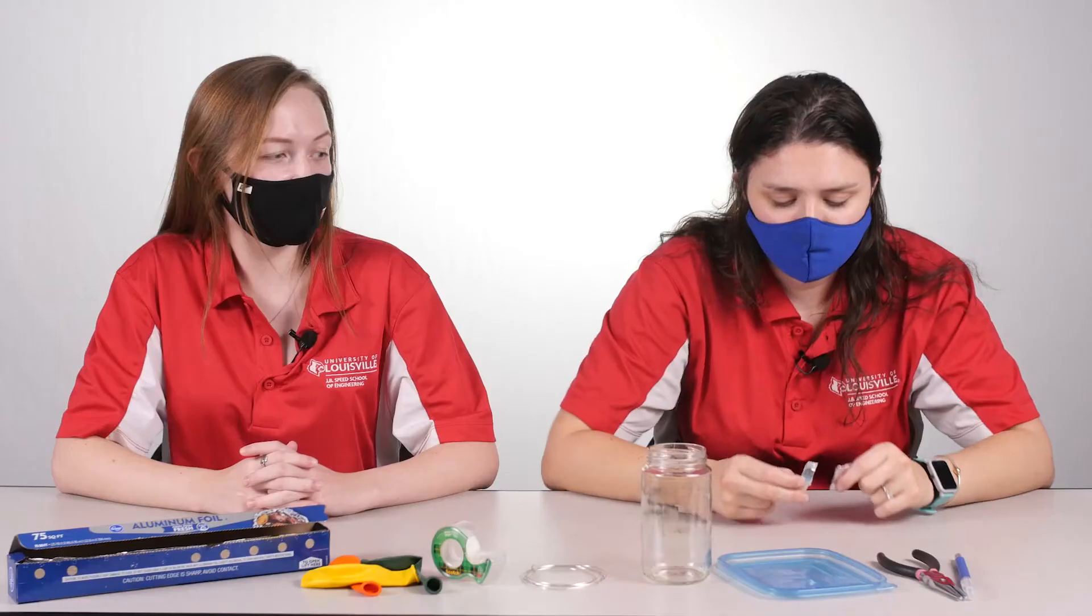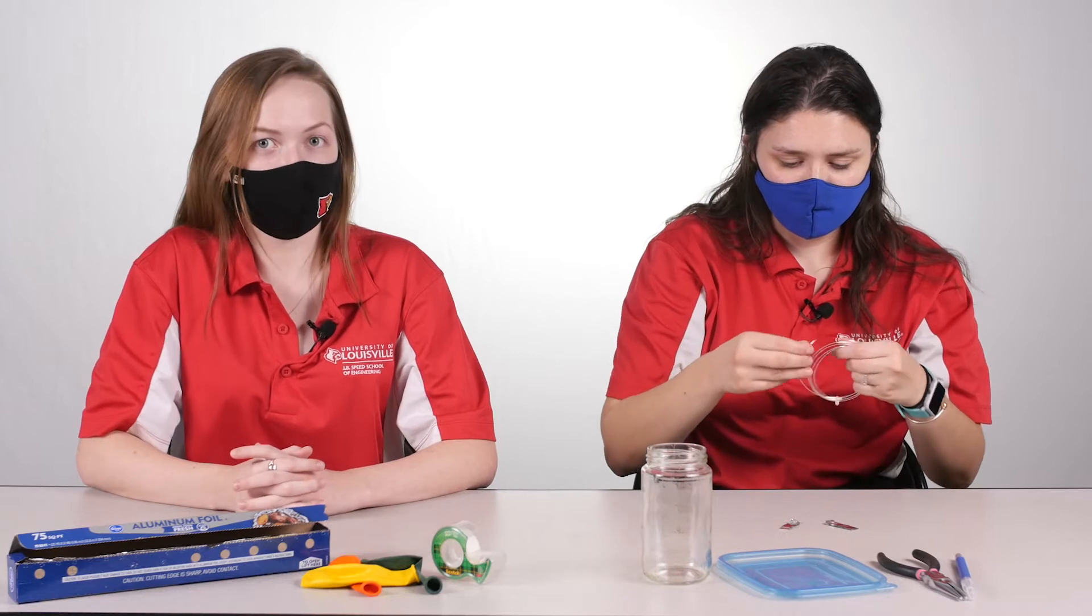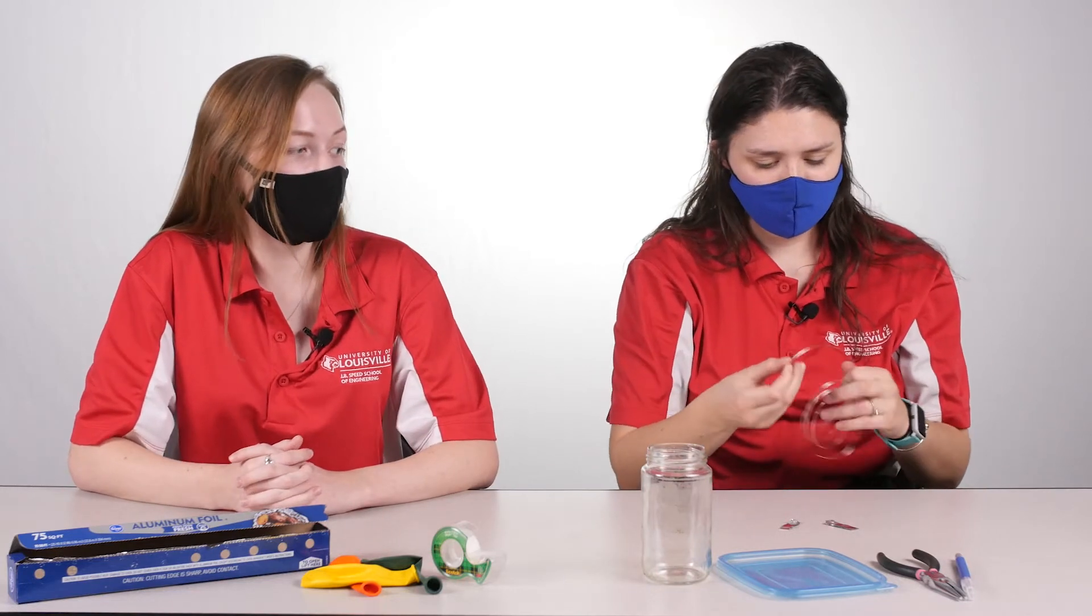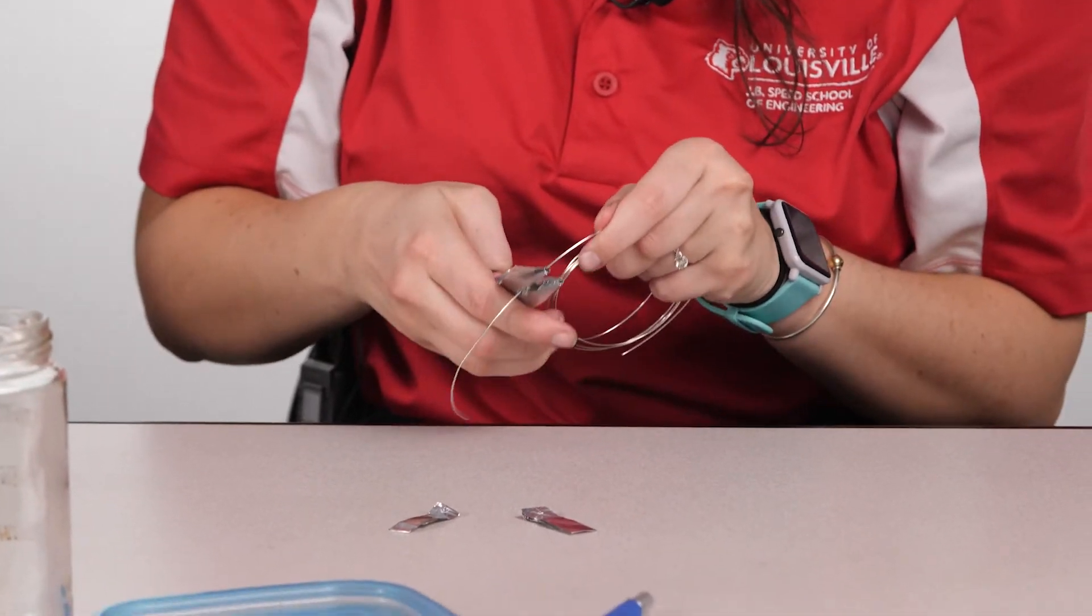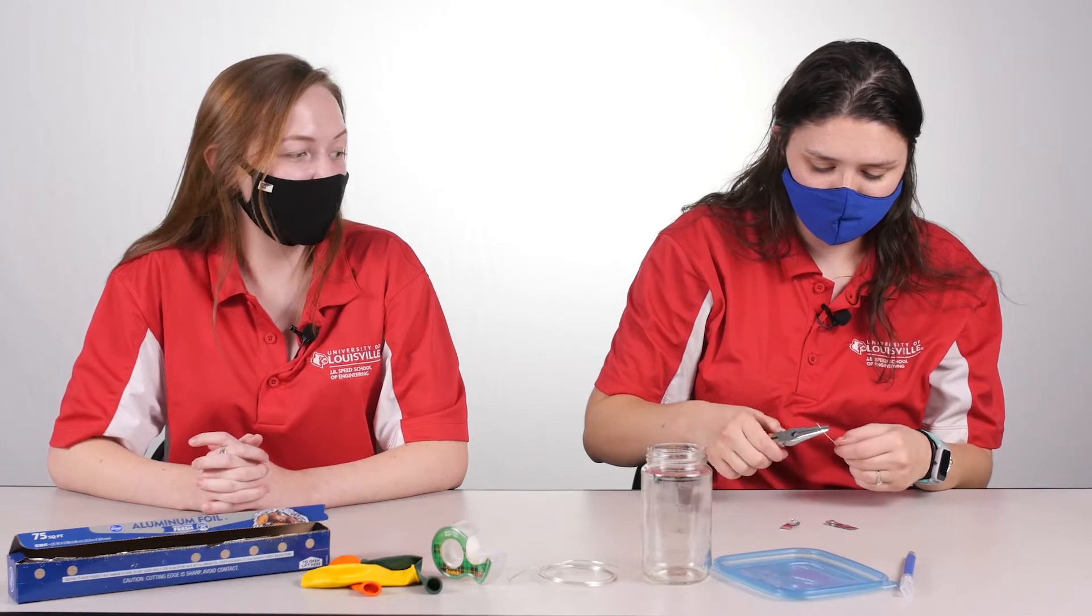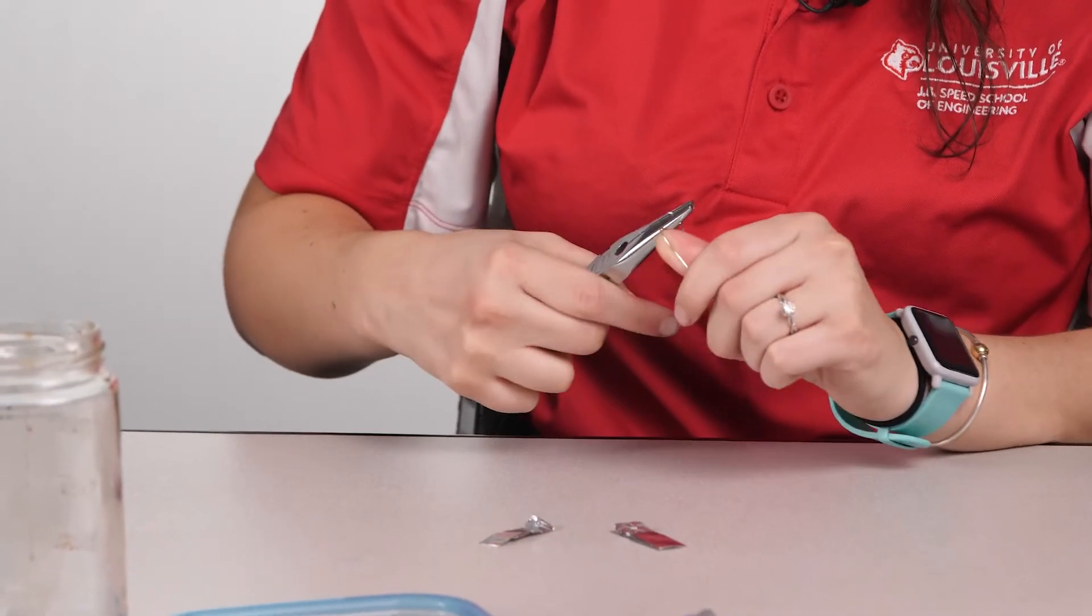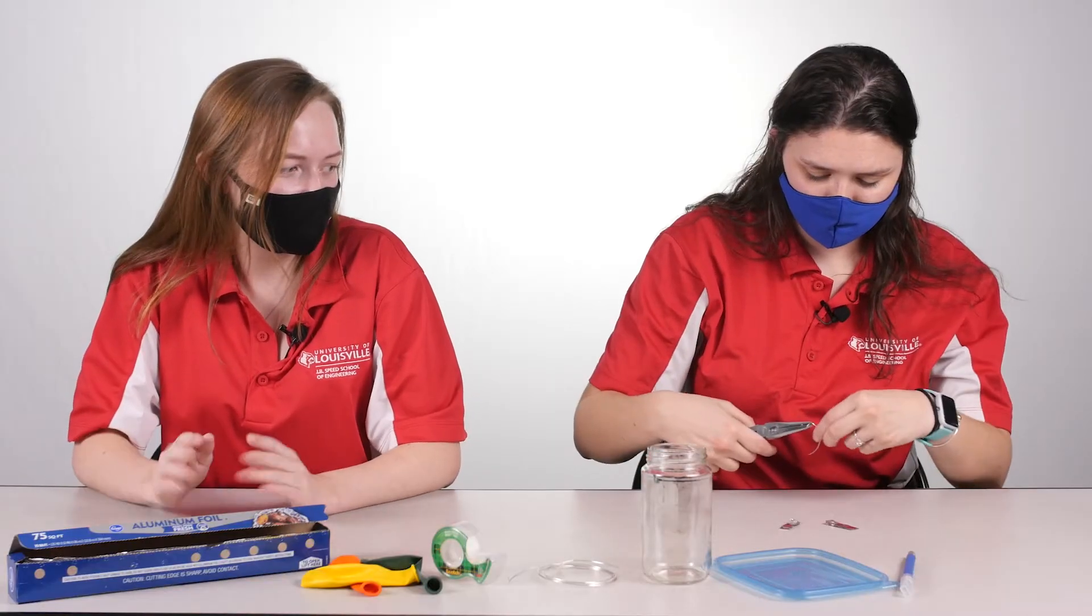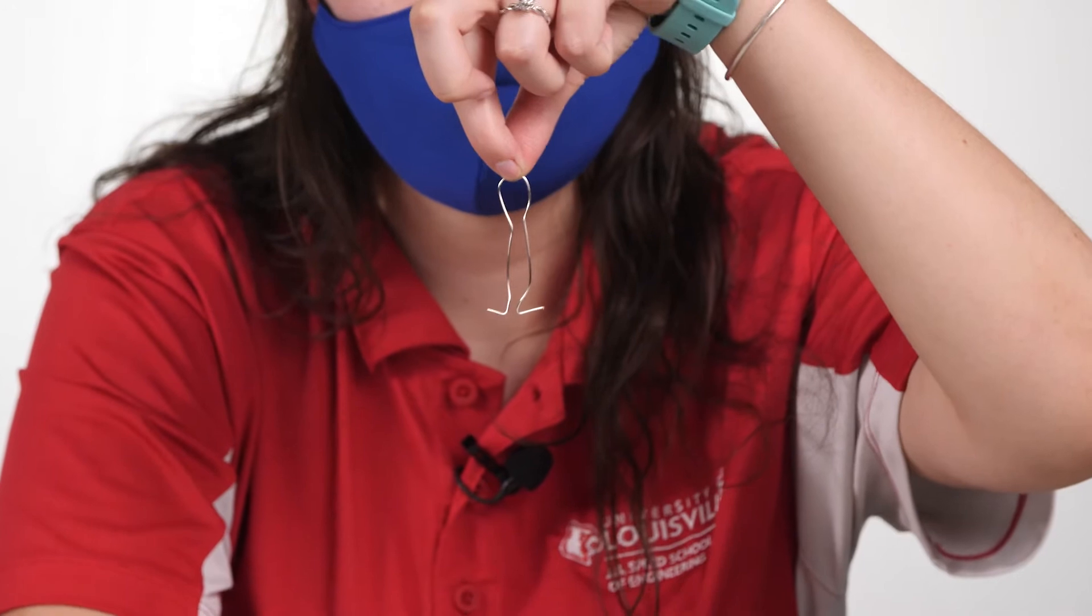Next, Emery's going to take the wire and the pliers, although have a parent do this, and she's going to cut a little piece of the wire so that we can use it for the rest of the experiment. After Emery cuts the wire, she's going to bend it into a specific shape. She wants to curl up the edges into a final design that looks like this.